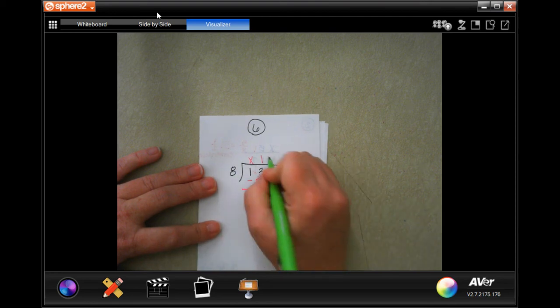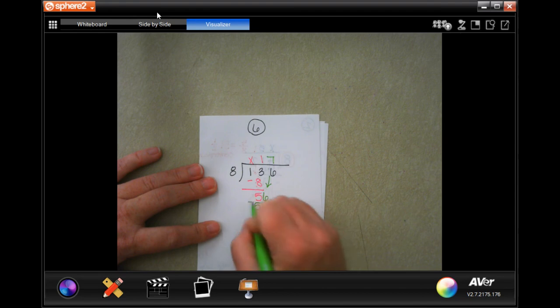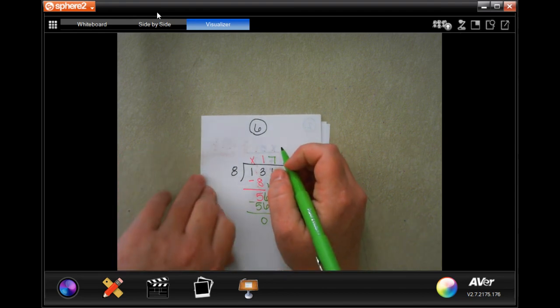8 goes into 56, 7 times. 7 times 8 is 56. 0. So, 17 bricks.